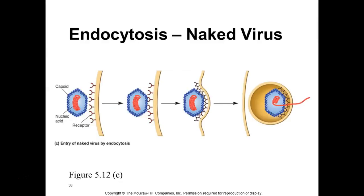For naked viruses, the proteins of their capsid bind to receptors on our cells and typically cause our cells to endocytose them — our membrane surrounds them. But because there's no envelope to peel off, you can't release a nucleocapsid that way. Instead, the nucleic acid and any necessary enzymes escape the vesicle directly.